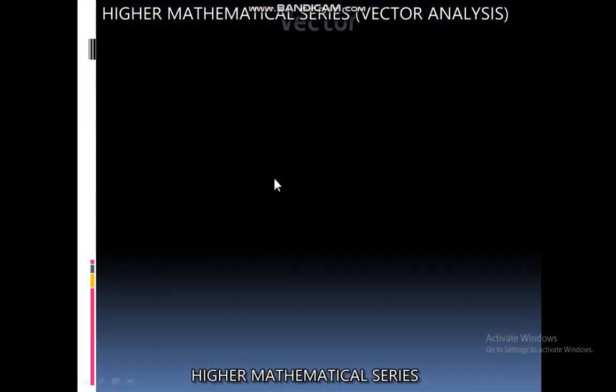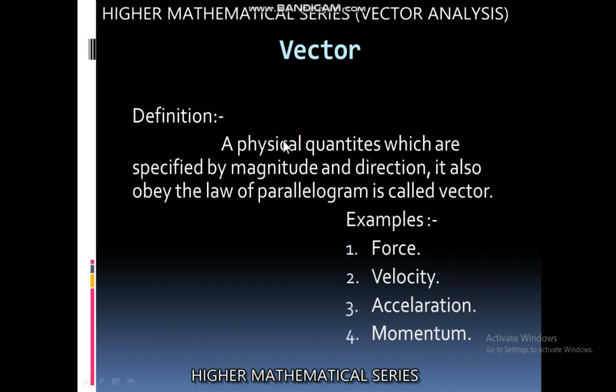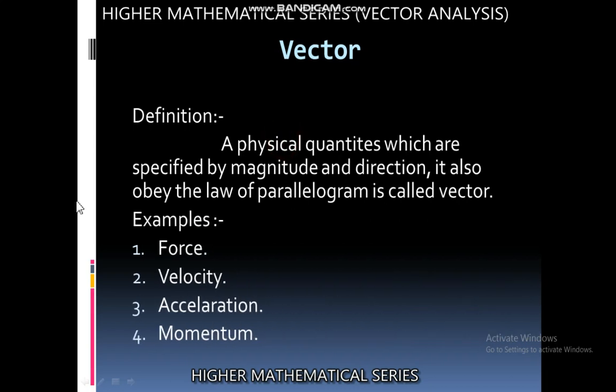Here is the definition of vector. A physical quantity which is specified by magnitude and direction, and also obeys the law of parallelogram, is called a vector. Here are examples of vectors: force, velocity, acceleration, momentum.